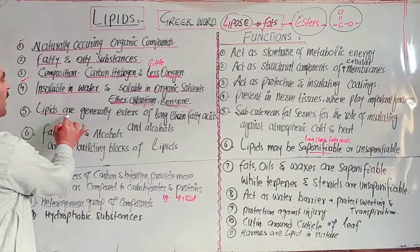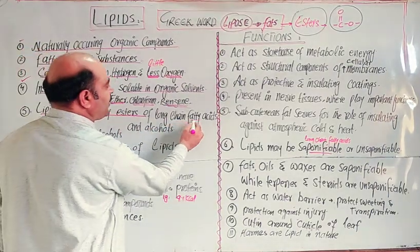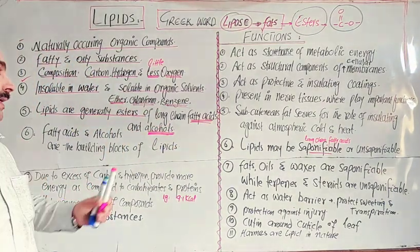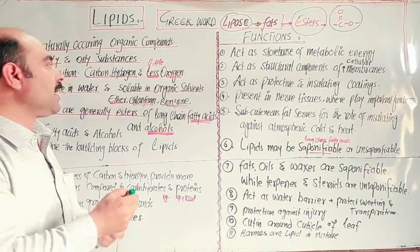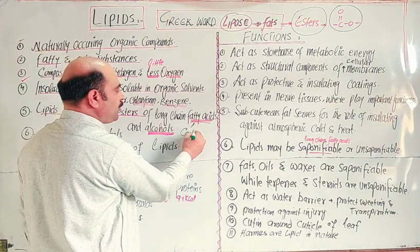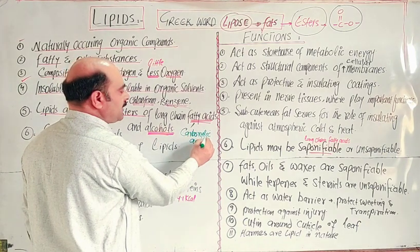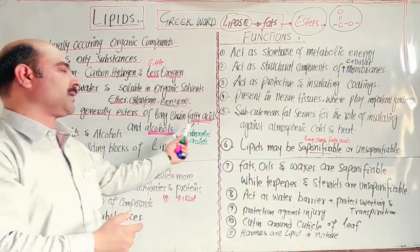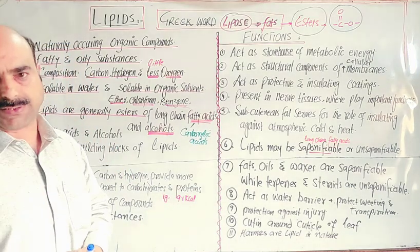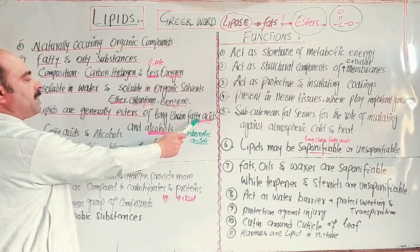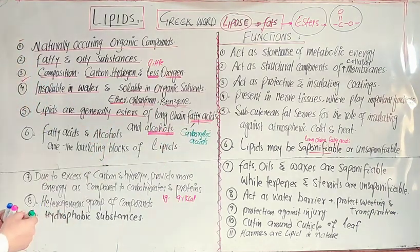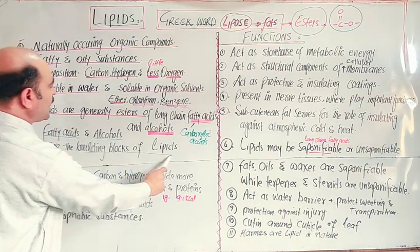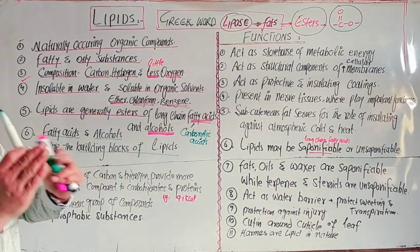Next, lipids are generally esters of long-chain fatty acids and alcohols. The basic building blocks of lipids are fatty acids. Fatty acids are actually carboxylic acids — they are called fatty acids because the hydrolysis of fats yields these acids. So fatty acids and alcohols are the building blocks of lipids.